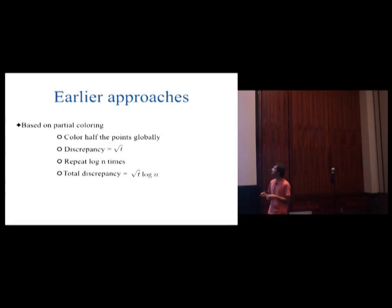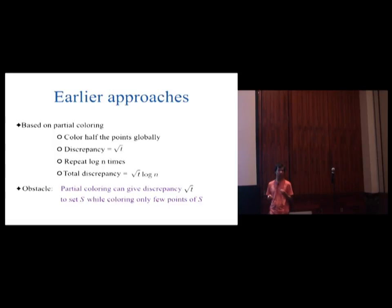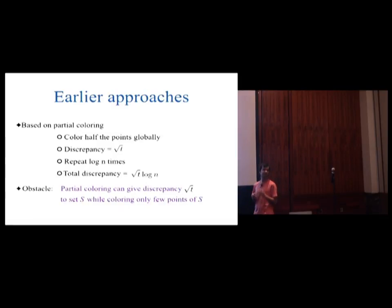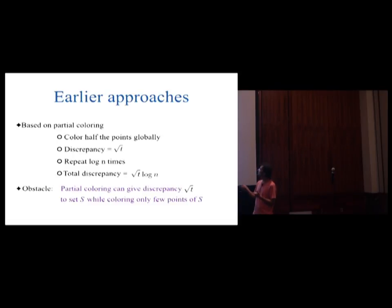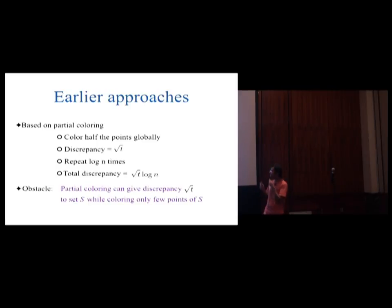The obstacle that partial colouring faces is this: you have no control whatsoever as to which of the half points will get coloured. So it is entirely possible that when you do a partial colouring, there is some set and you colour very few points of that set — maybe none at all. Even then partial colouring was giving this set a discrepancy of root t, which is a big overkill. If you only colour 5 points of the set, it should not get a discrepancy as large as root t.